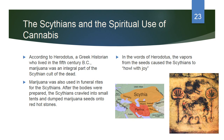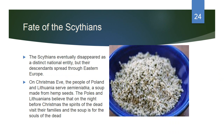The Scythians eventually disappeared as a distinct national entity, but their descendants spread through Eastern Europe. Interestingly, on Christmas Eve the people of Poland and Lithuania serve semeniukha — a soup made from hemp seeds. The Poles and Lithuanians believe that on the night before Christmas the spirits of the dead visit families, and the soup is for the souls of the dead.